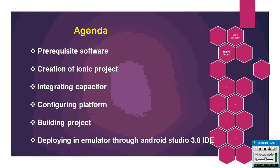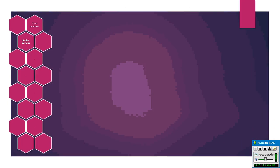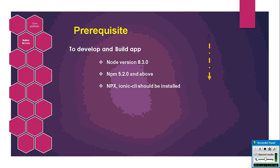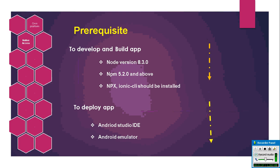Then, how to configure a platform for Android and iOS, how to build the project and deploy it into the emulator. First, we have to ensure we have all the required software. Ensure that we have the latest version of Node.js version 8.3 and npm 5.0 and above. We also have to install the Ionic CLI to create a project and build the project. Then we have to ensure Android Studio and the Android emulator are installed.